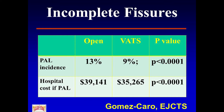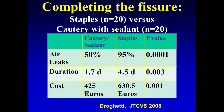This paper from Italy compared different ways to complete the fissure in a randomized prospective study: 20 patients randomized to staples, 20 patients to electrocautery with the sealant TachaSeal. The incidence of air leaks with staples was a lot higher; the duration of the air leak was a lot shorter for patients completing the fissure with electrocautery and TachaSeal, and it was actually more expensive to use staples for the operation.